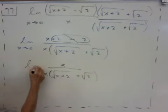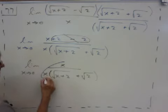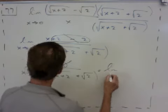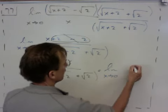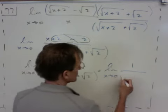Limit here as x approaches 0. And what's going to happen right here is the x's are going to cancel. So we end up with the limit as x approaches 0 of 1 over root x plus 2 plus root 2.